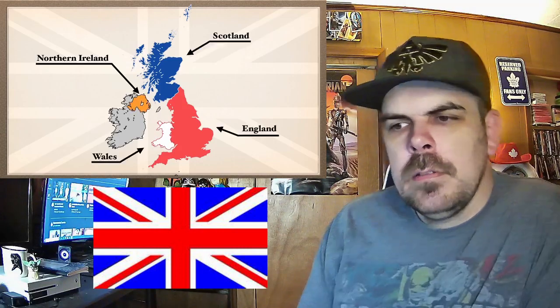To the north is Scotland, shown in blue, and to the west is Wales, shown in white. And, often forgotten even by those who live in the United Kingdom, is Northern Ireland, shown in orange. Each country has a local term for the population.